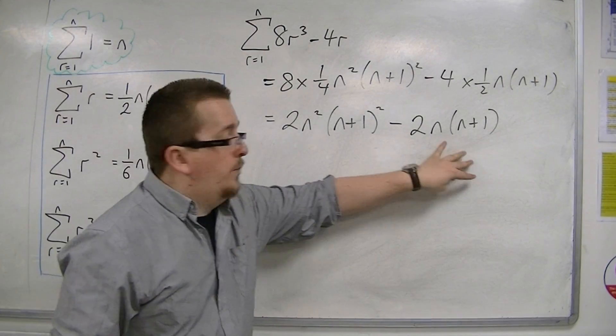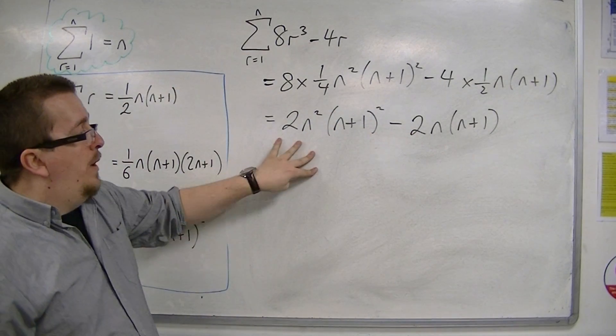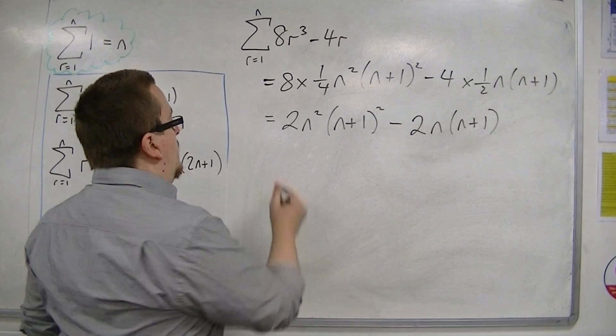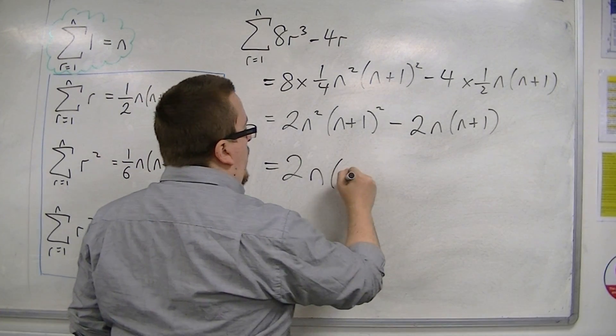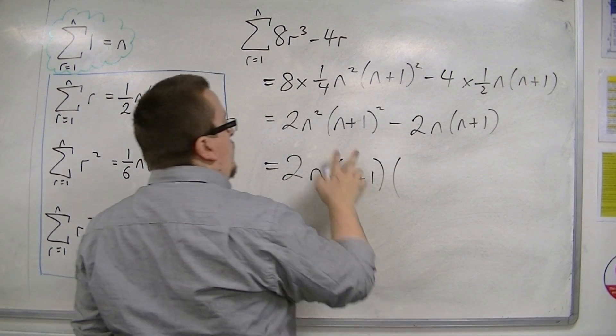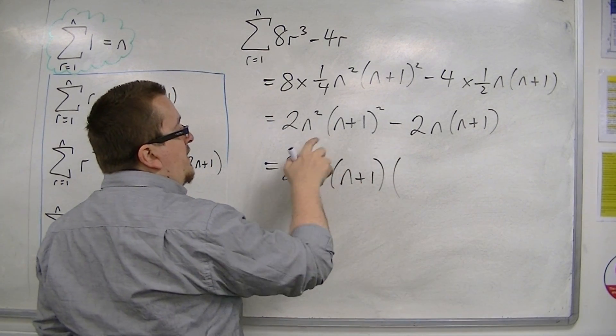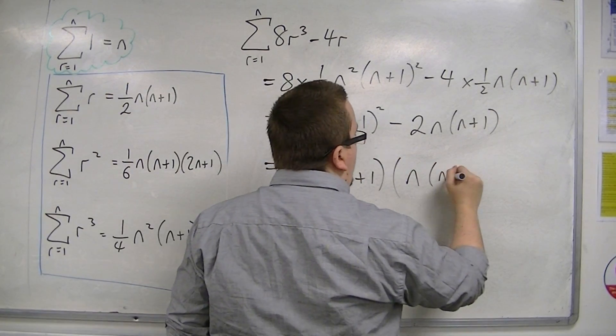Now both, this is where the tricky bit comes in, both have 2n. So 2 can go out the front with an n, and both have an n+1. So inside the bracket, we're going to have n times (n+1) inside.